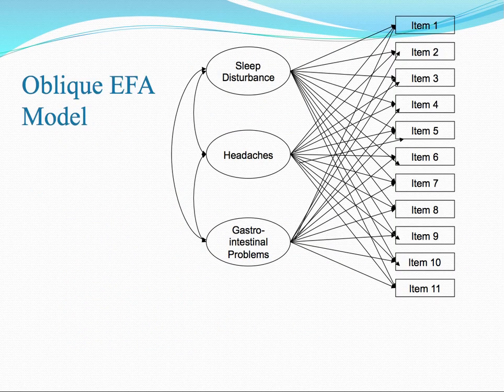Here is an example of an oblique exploratory factor analysis model. It is oblique in the sense that all latent factors are specified to be related to one another. In this particular example, we have three latent variables, and each latent variable is specified to be related to all 11 items.